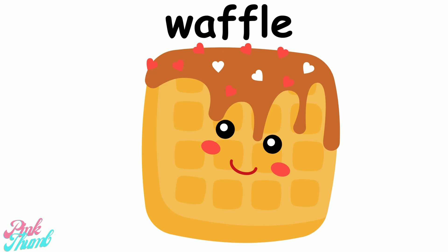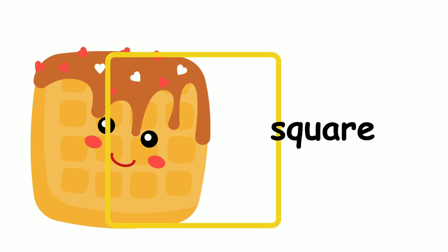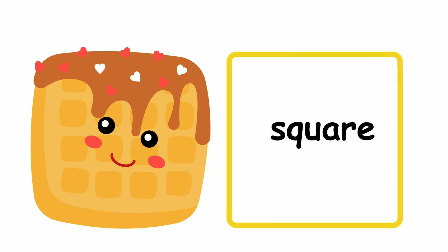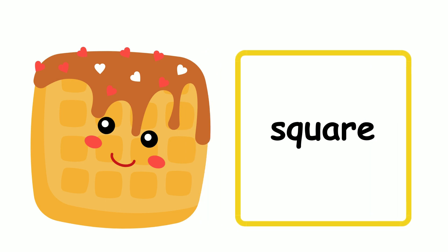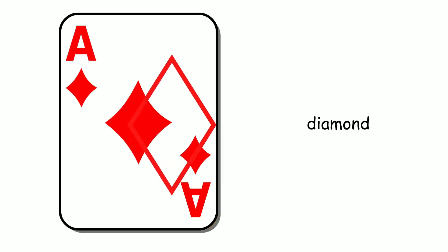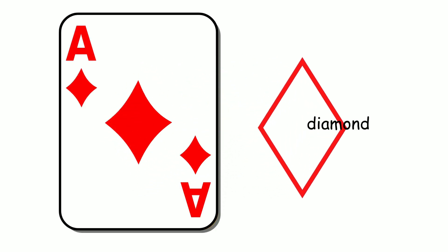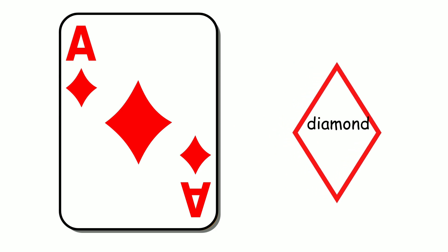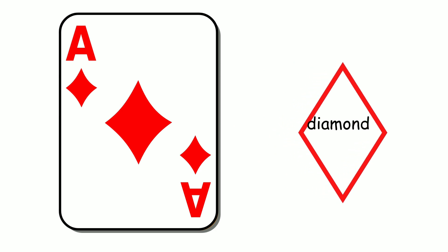What shape is this waffle? A square. What shape is on this card? A diamond.